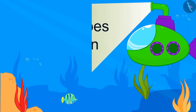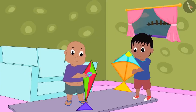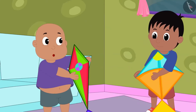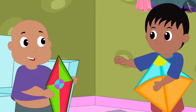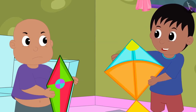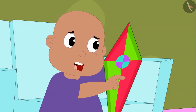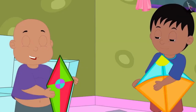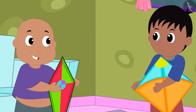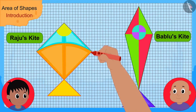In this video, we will learn to estimate the area of shapes. Raju and Bablu have made kites. Raju, look how beautiful my kite is, Bablu told Raju. Your kite is really beautiful, but my kite is bigger than your kite, Raju said. No, my kite is bigger and more beautiful as well, Bablu replied. Let us draw outlines of both kites on a grid paper and find their areas — one whose kite has a larger area will have the larger kite. Bablu then drew outlines of the kites on a grid paper.